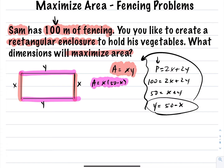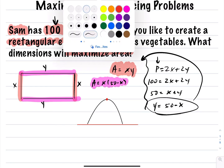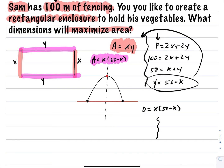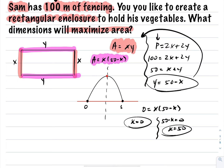Now I want to maximize the area equation. This is a quadratic, and if I expand it out, the leading coefficient is negative, so it opens downwards — which means I can find a maximum value at the vertex. To find the vertex, I'll average the two roots. Setting area equal to zero, I get x equals 0 or 50 minus x equals 0, so x equals 50. The two roots are 0 and 50, so the axis of symmetry — the average — is 25.